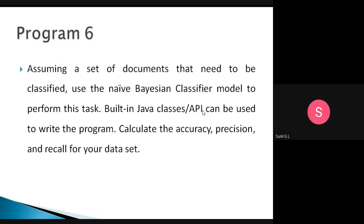This is the sixth program, which is about a Naive Bayes classifier model. The problem statement: assuming a set of documents that need to be classified, use the Naive Bayes classifier model to perform this task. Built-in Java classes or API can be used to write the program. We need to take a set of documents and classify them.